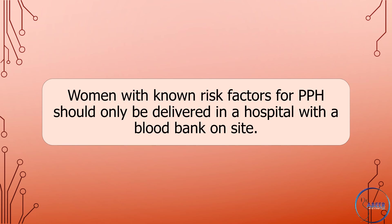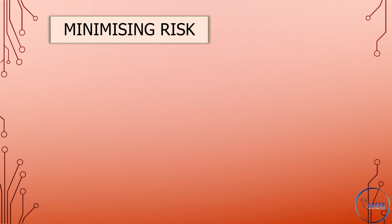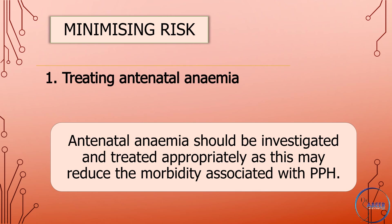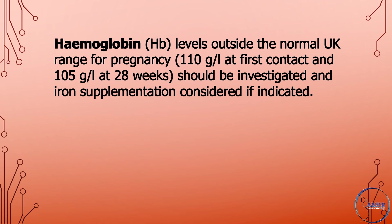Women with known risk factors for PPH should only be delivered in a hospital with a blood bank on site. Treating antenatal anemia: antenatal anemia should be investigated and treated appropriately as this may reduce the morbidity associated with postpartum hemorrhage. Hemoglobin levels outside the normal UK range for pregnancy — 110 grams per liter at first contact and 105 grams per liter at 28 weeks — should be investigated and iron supplementation considered if indicated.